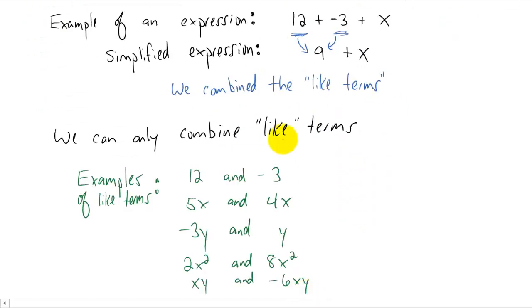So these are all examples of what we call like terms. Obviously from above twelve and negative three were like terms because we combined them to make nine. 5x and 4x are like terms because they have the same variable, that's x, and it's raised to the same power. The power of an x in each one of these cases is just one.